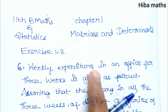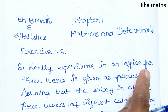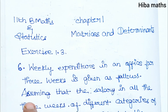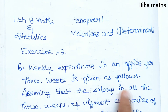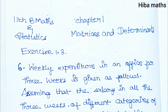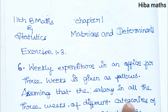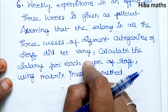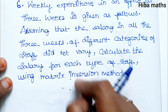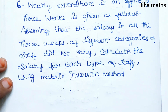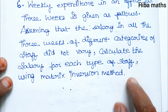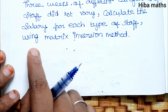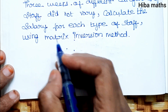Weekly expenditure in an office for 3 weeks is given as follows in the table. Assuming that the salary in all 3 weeks of different categories of staff did not vary, calculate the salary for each type of staff using the matrix inversion method.